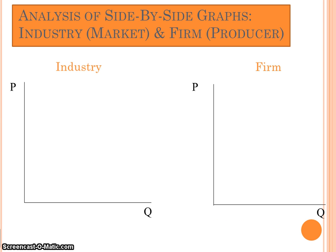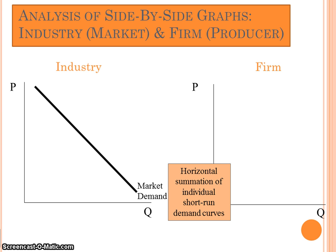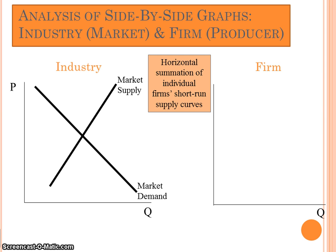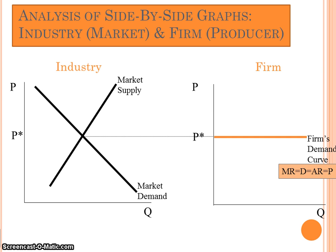As we study perfect competition, we're going to be looking at what we call side-by-side graphs of the industry and representative individual producers or firms, to see how these two parties interact with each other. The market demand curve is the horizontal summation of all the individual short-run demand curves and individual producer demand curves. The market supply curve is the horizontal summation of all the individual firms' short-run supply curves. The intersection of these two curves sets the price that the individual producer will sell at.